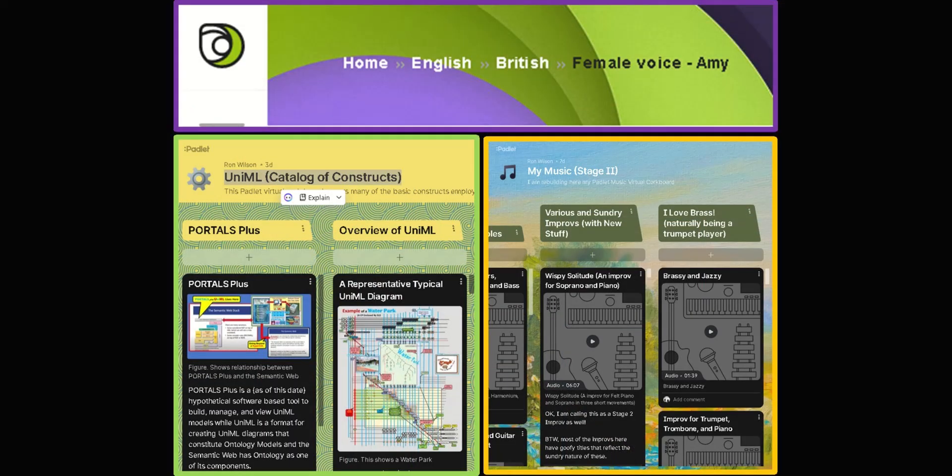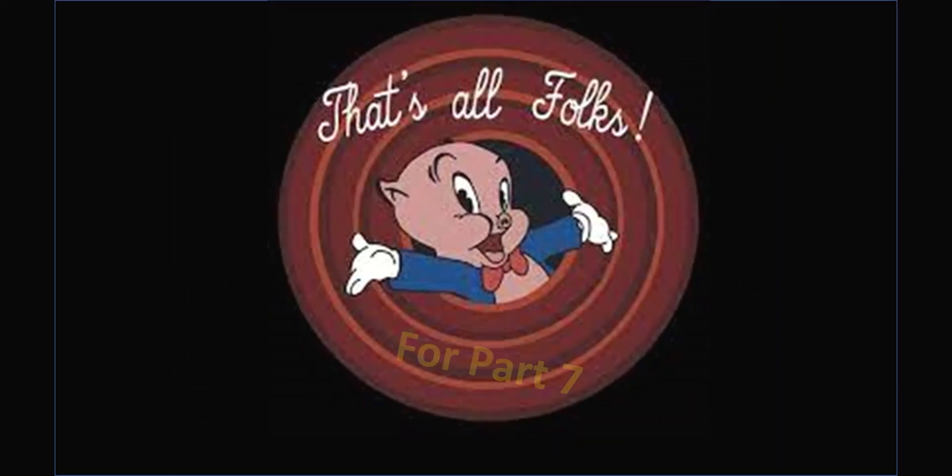And on that note, let me end this rather long part 7 here, with the normal references to links being in the description box, and we have three improvs by Ron serving as background music for this video, albeit and not at all to my liking, maybe a bit too loud at times, with the first named improv for crystal flute, lap harp, bells and drums. The second named a bit belated 2023 New Year's Eve improv, and the third named classical jazz. And thanks again for the presentation. You're quite welcome. And that is all for part 7.